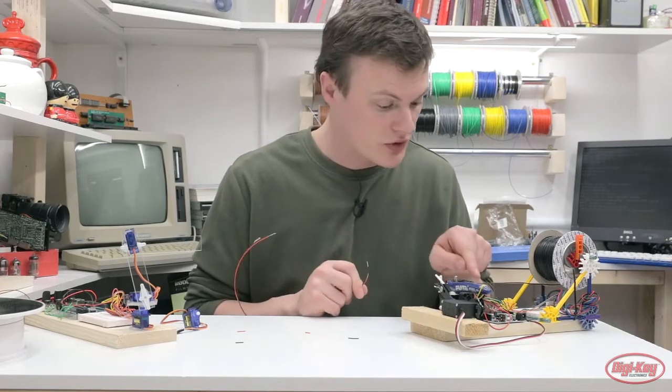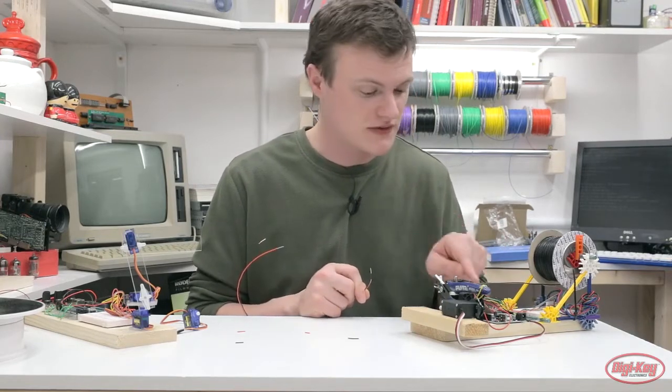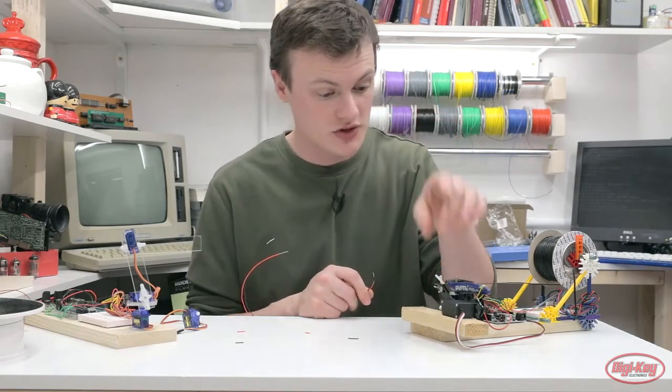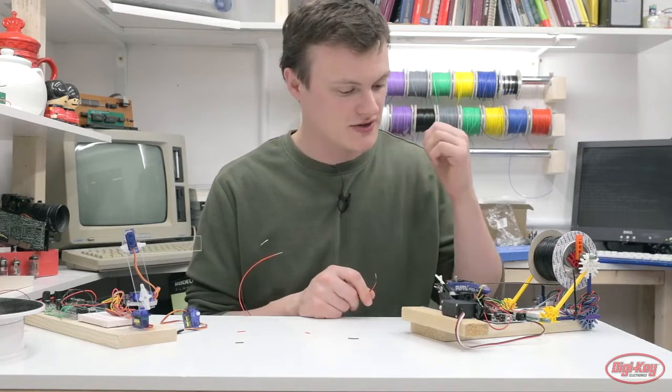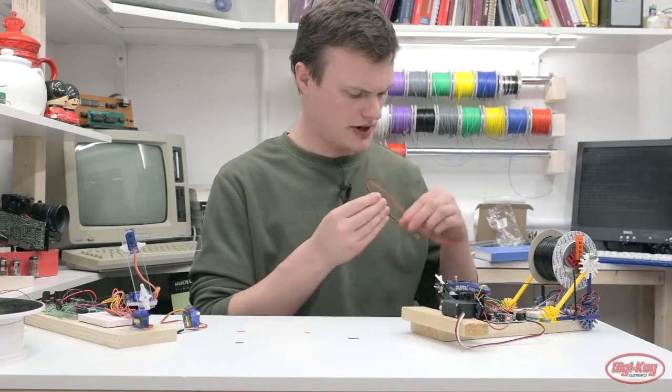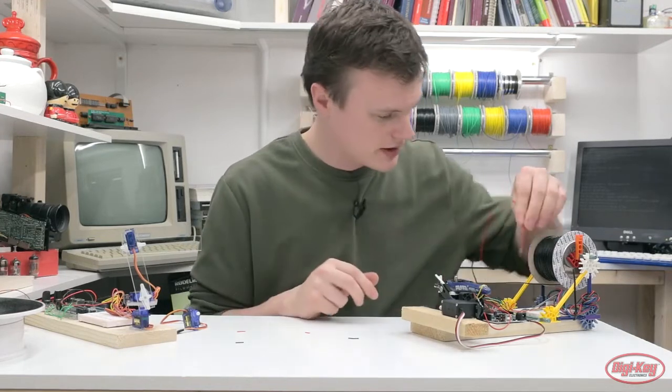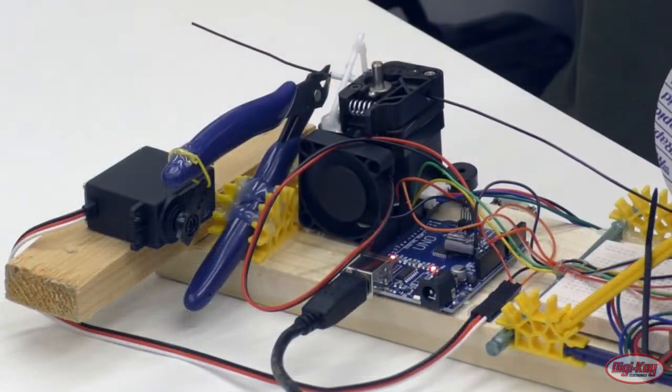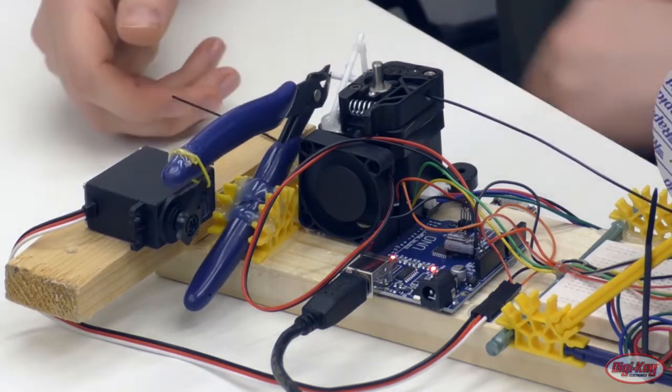But you may also notice I have put a 470 microfarad capacitor across the power inputs of the Arduino, so when the servo does draw its power it doesn't cause a brownout. So we're just going to go ahead and connect these wires up to the power supply I have over there.